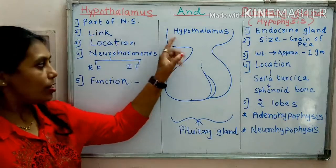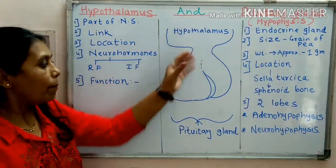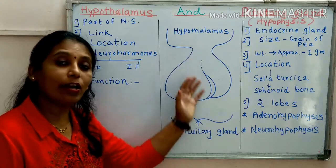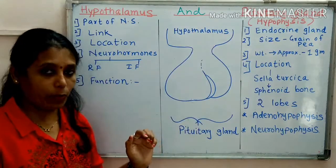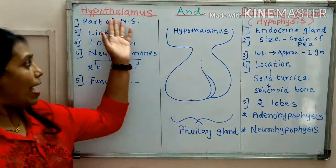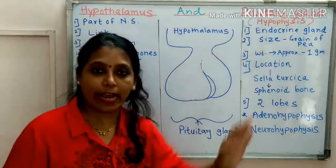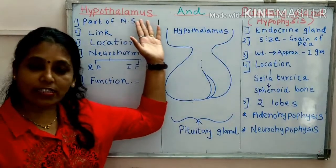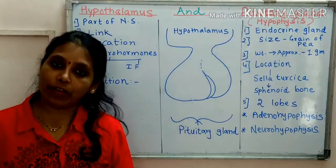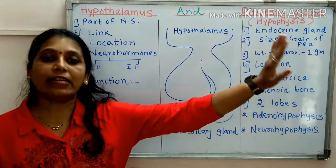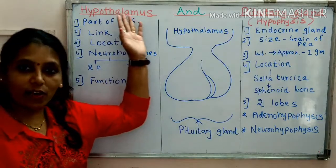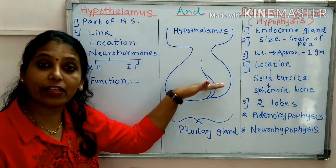Here is hypothalamus, and this is the structure of hypothalamus. This is pituitary gland. Pituitary gland is present at the base of hypothalamus — it is attached to hypothalamus. Hypothalamus links with pituitary gland, meaning the nervous system is linked with endocrine system, because hypothalamus is part of the nervous system and pituitary gland, being an endocrine gland, is part of the endocrine system.